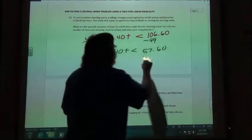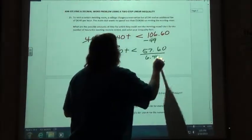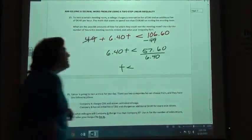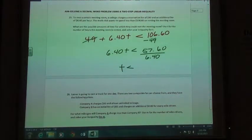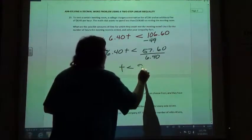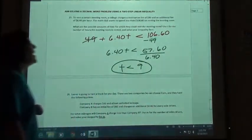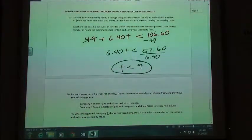I got to divide by my $6.40, so T has to be less than 9.9, so if I rent the hall for less than 9 hours I'm going to stay in budget.